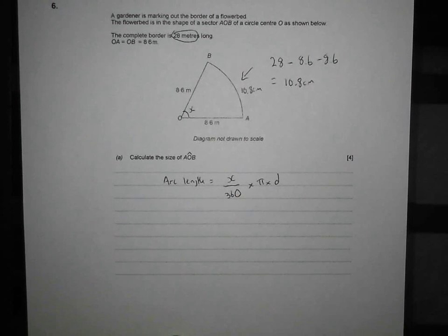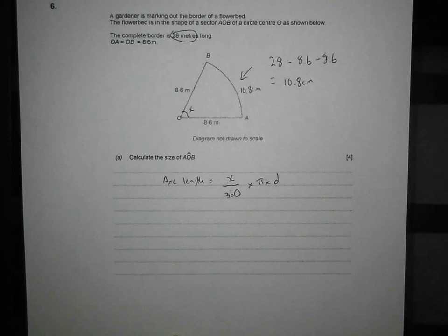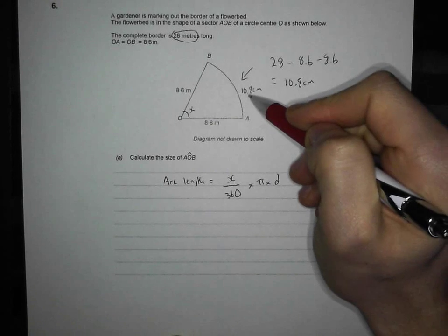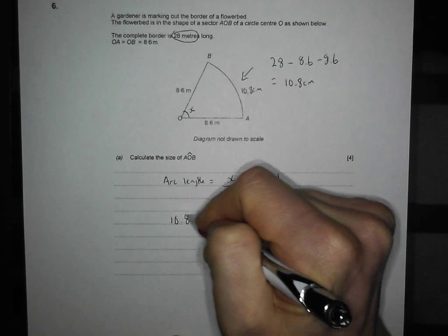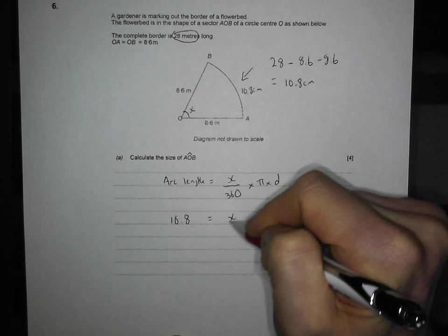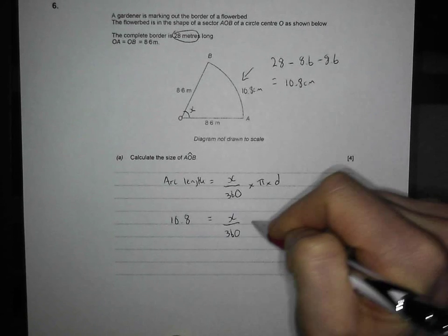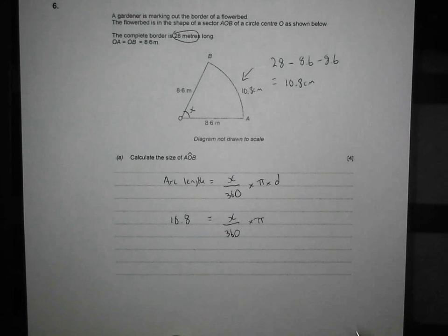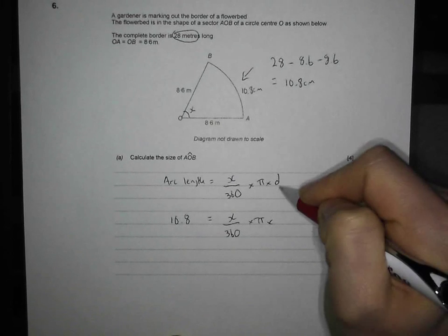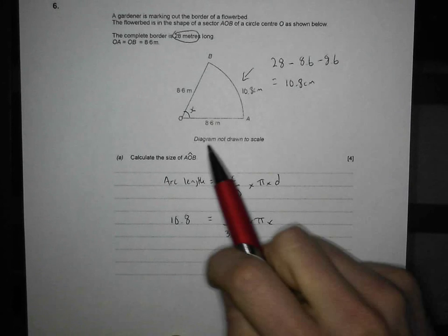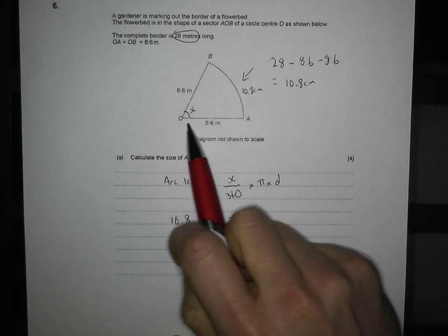Now, the question is, how on earth does that help us? Well, it helps us in a massive way because we already know what the arc length is. We already know that's 10.8. We don't know what x is, but that's okay. Times by pi. Well, we know what that is. That's just a number. Times by, well, what's our diameter? Well, that's easy enough as well because this is just a radius. 8.6 is just a radius.